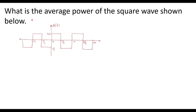Let us consider one example to find the power of a signal. What is the average power of the square wave shown below? The given signal x(t) is a continuous-time signal as well as a periodic signal. We know that a continuous-time periodic signal is always a power signal.